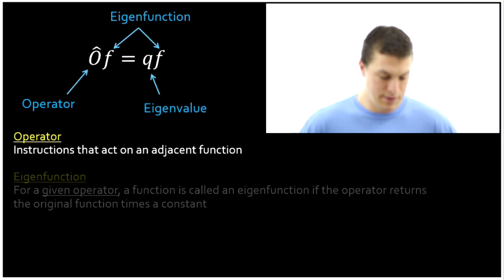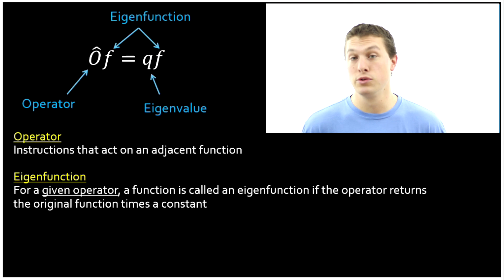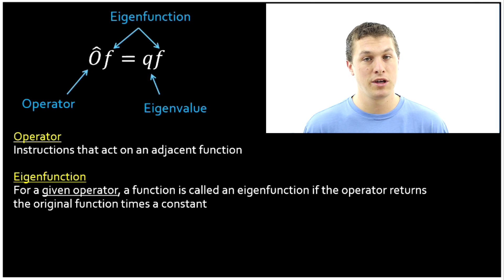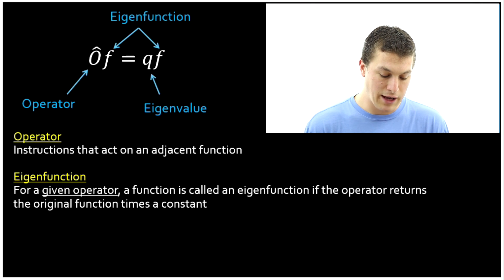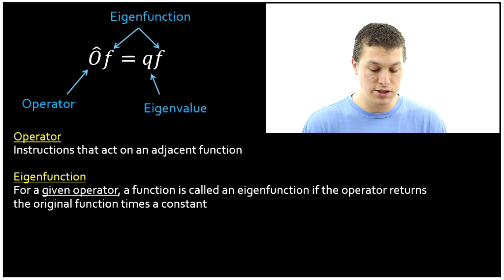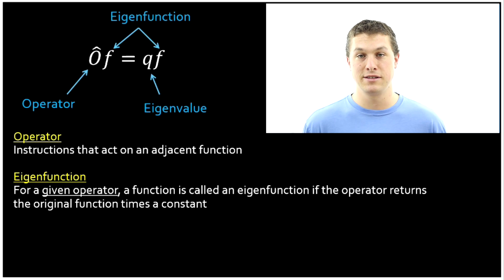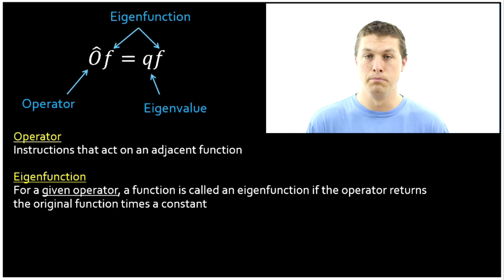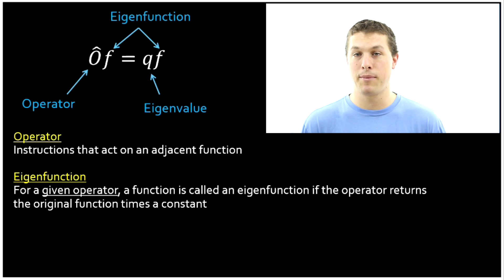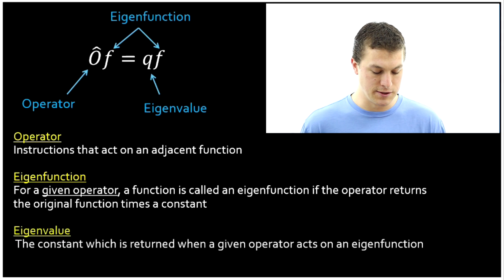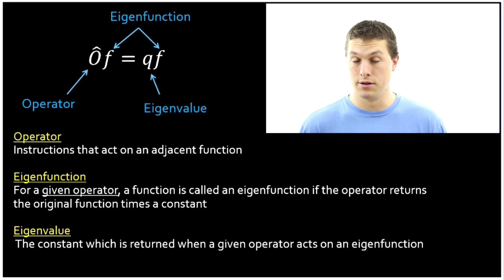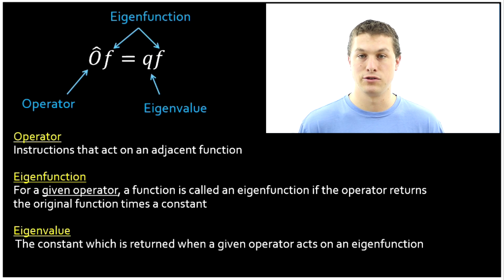Eigenfunction is sort of a mouthful. For a given operator — and note that a function could be an eigenfunction with respect to one operator but not another — a function is called an eigenfunction if the operator returns the original function times a constant. If we get back that function, that's called an eigenfunction; if we don't, it is not. The eigenvalue is the constant that gets returned when an operator acts on an eigenfunction. If something's not an eigenfunction, there is no eigenvalue.